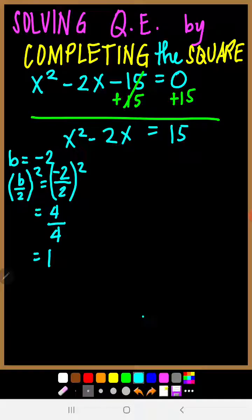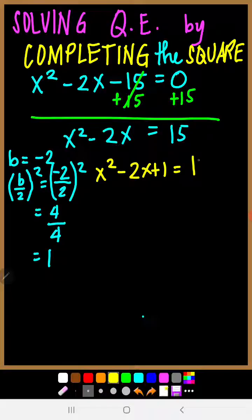So what are we going to do with this value of 1? We're going to use it — we have to add 1 to both sides. So x squared minus 2x plus 1 equals 15 plus 1. This becomes a perfect square trinomial.